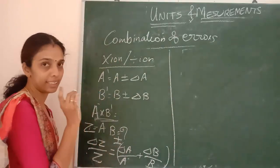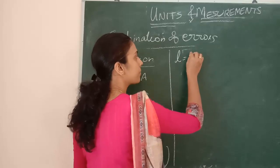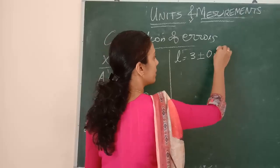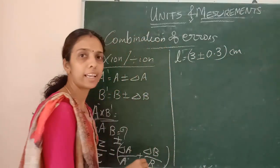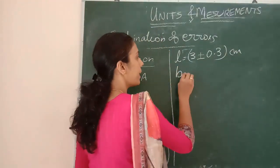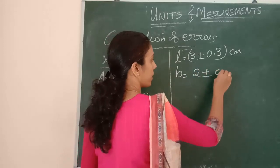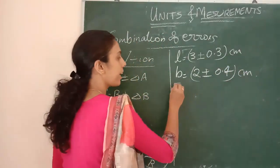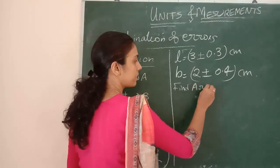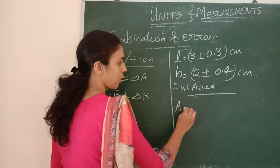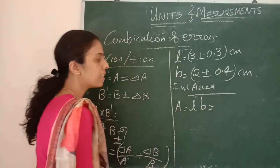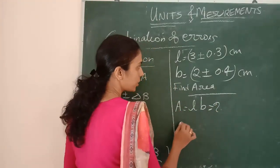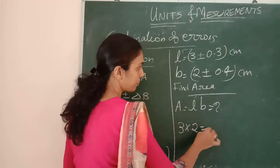The relative error of the final result will be equal to the sum of relative errors of each multiplier. I will solve it with an example. Suppose the length of a rectangle is 3 plus or minus 0.3 centimeter, and breadth is 2 plus or minus 0.4 centimeter. Find the area of the rectangle. The formula is length into breadth, so first we do 3 into 2 equals 6.